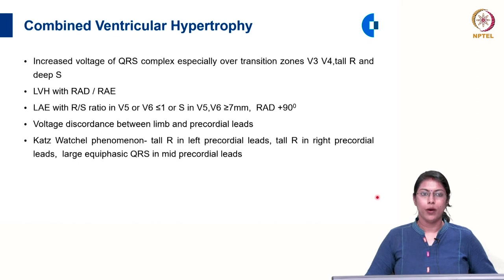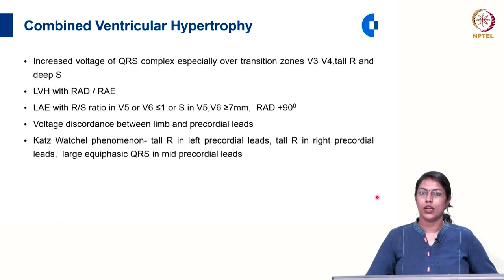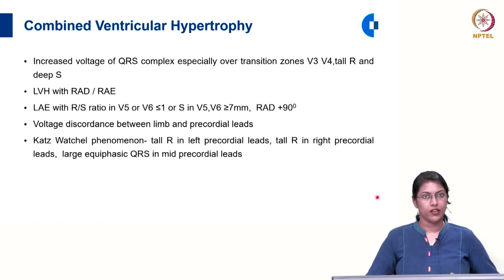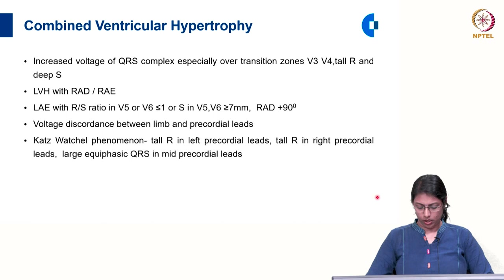In combined ventricular hypertrophy, a combination of LVH and RVH findings are seen: increased voltage of QRS complex especially over the transition zones V3 and V4, showing a tall R and deep S. Or there may be LVH with right axis deviation or right atrial abnormality, a left atrial enlargement with RS ratio in V5, V6 less than or equal to 1, S in V5 or V6 more than or equal to 7 millimetre, right axis deviation more than plus 90 degrees, or voltage discordance between limb and precordial leads.